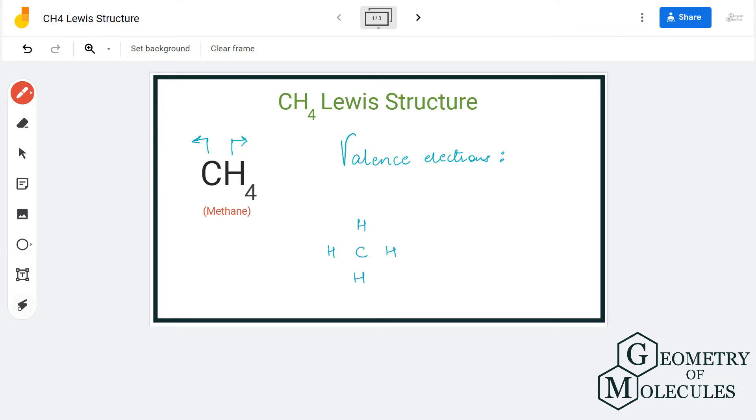Carbon has four valence electrons and each hydrogen atom will have one valence electron in its outer shell. In total, we have eight valence electrons for CH4.